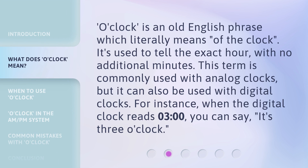O'clock is an old English phrase which literally means 'of the clock.' It's used to tell the exact hour with no additional minutes. This term is commonly used with analog clocks, but it can also be used with digital clocks. For instance, when the digital clock reads three o'clock, you can say: it's three o'clock.